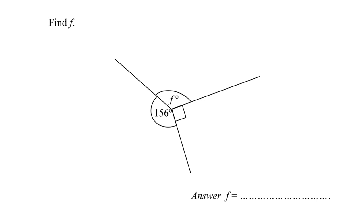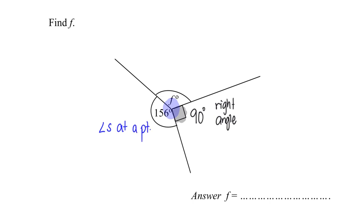Hello everyone, welcome to this video where we are required to find the value of F. First thing first, this is a 90-degree right angle. One whole circle represents 360 degrees, because it is angles at a point. So my F is simply 360 minus 156 as well as the right angle.